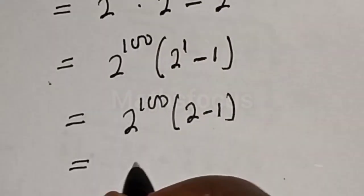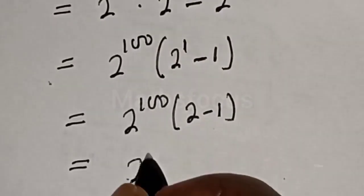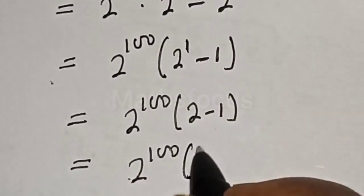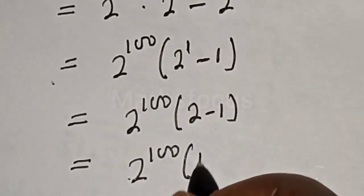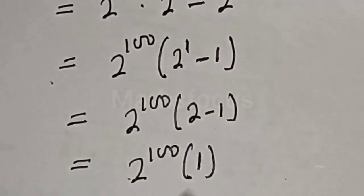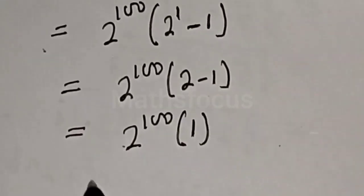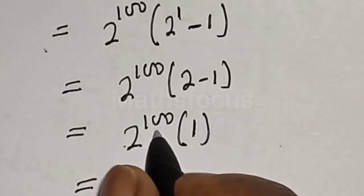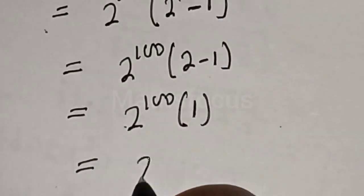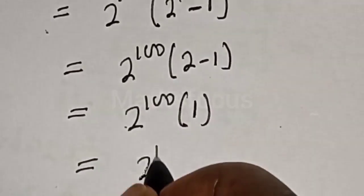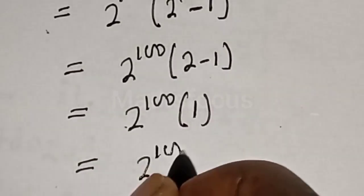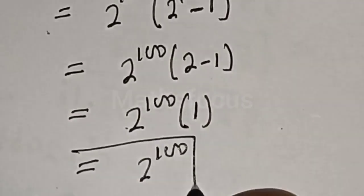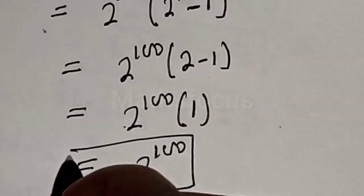This simplifies to 2 raised to power 100 multiplied by 1, which equals 2 raised to power 100. And this is the final answer.